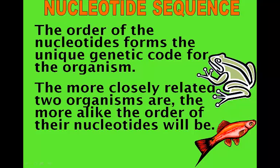A sequence of nucleotides will form what we call a gene. One single gene is going to code for a specific protein. The more closely related two organisms are, the more similar those sequences of nucleotides are going to be.